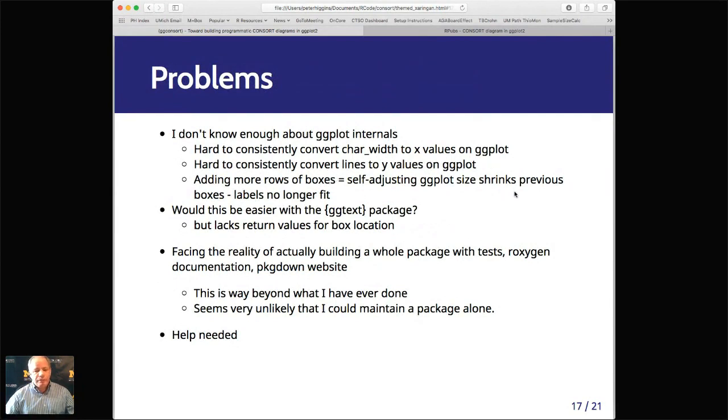It's hard to consistently convert character width to x values on a ggplot and lines into y values on the ggplot. As I add more rows of boxes, the self-adjusting ggplot size shrinks the previous boxes, so the labels are a little bit bigger than the boxes. It might be easier with the ggtext package, and I've been experimenting with that a little bit, but it doesn't return values for its box location, so it's a little bit hard to draw the arrows to the right place.